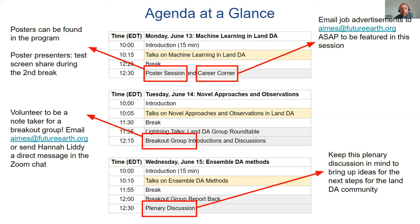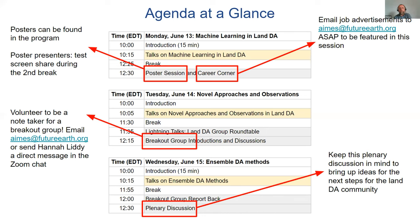Tomorrow there are going to be breakout groups on specific topics. What we would really like is volunteer note takers for each breakout group. If there's a topic you'd particularly like to be the note taker and rapporteur for, email aims at futureearth dot org, or send Hannah a DM in the Zoom chat. Finally, at the very end on Wednesday, we're going to have a plenary session. We'd like you to keep that plenary in mind throughout the workshop so we can start building the discussion around your ideas for what you think the next steps are for this community.